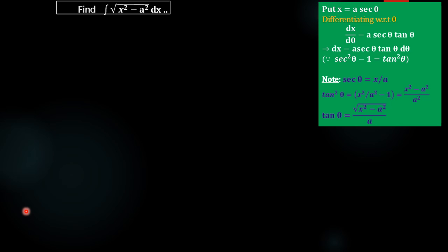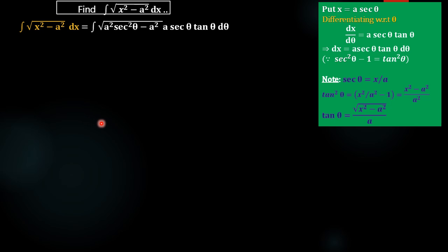The method we are using here to make it an integrable function is the substitution method. We are taking x = a·sec θ. Differentiating with respect to θ, we get dx/dθ = a·sec θ·tan θ, and therefore dx = a·sec θ·tan θ dθ. Substituting these values, x² = a²·sec²θ, so the expression under the root becomes a²·sec²θ - a², and dx = a·sec θ·tan θ dθ.